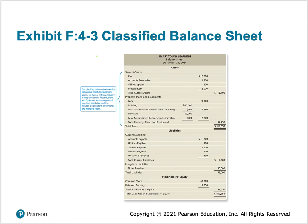Let's look at a picture of this classified balance sheet — Exhibit 4-3 from our textbook. It's just like the previous balance sheet except now it's classified, meaning it has additional labels: current assets versus PPE, and current liabilities versus long-term liabilities. Within plant, property, and equipment we still list the building less accumulated depreciation to get the book value.